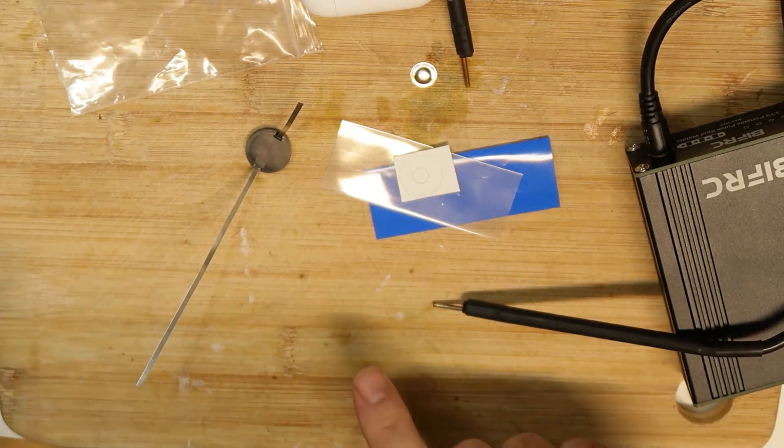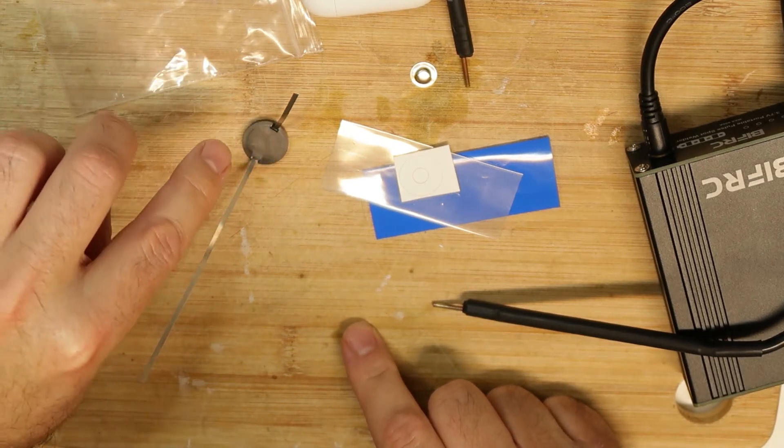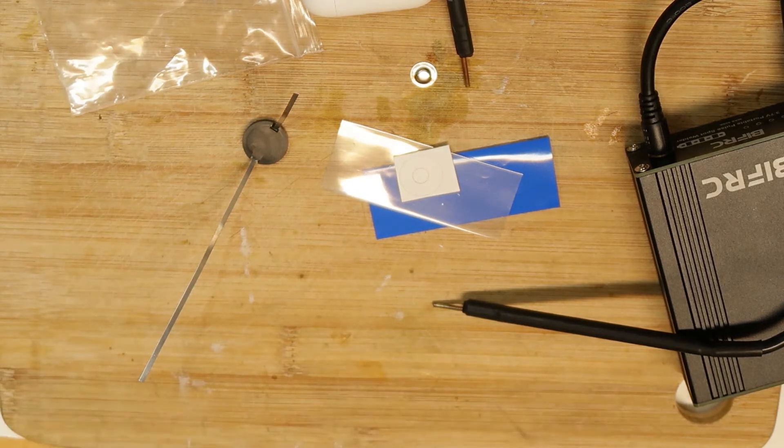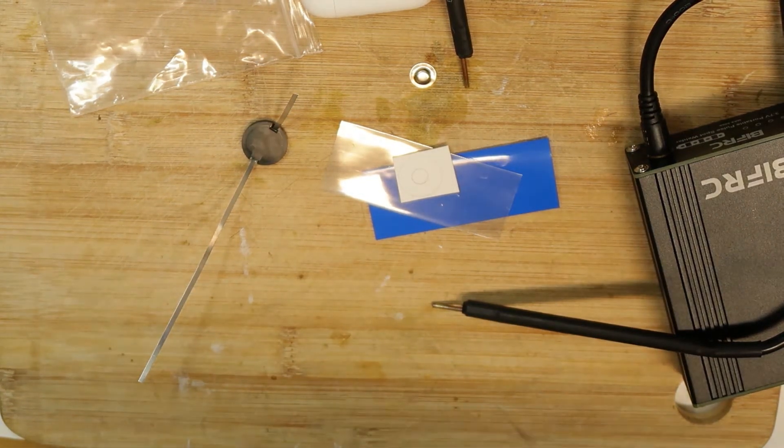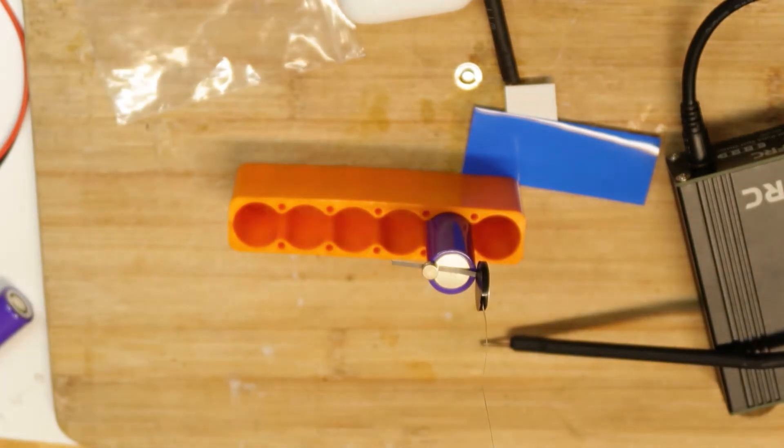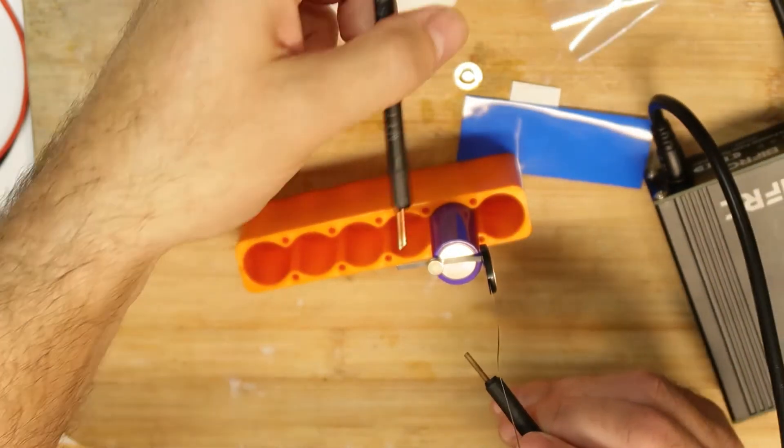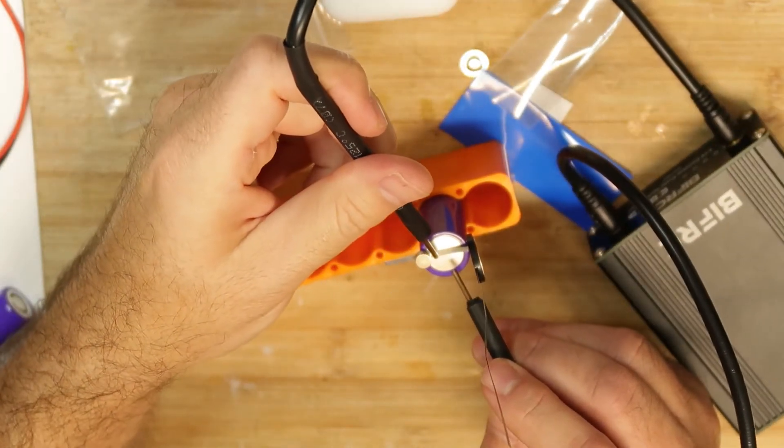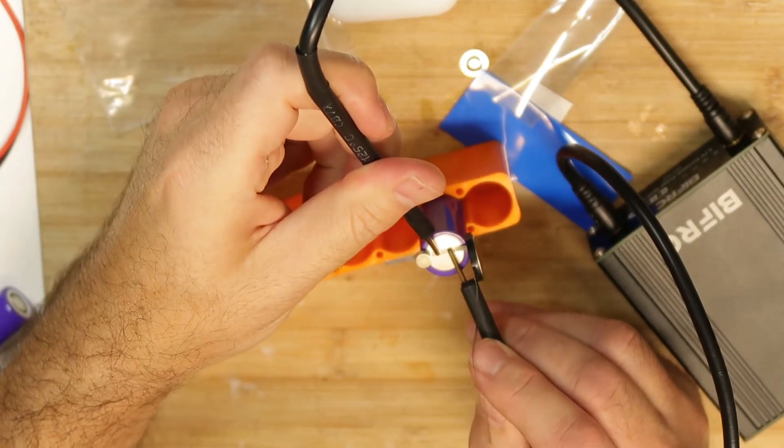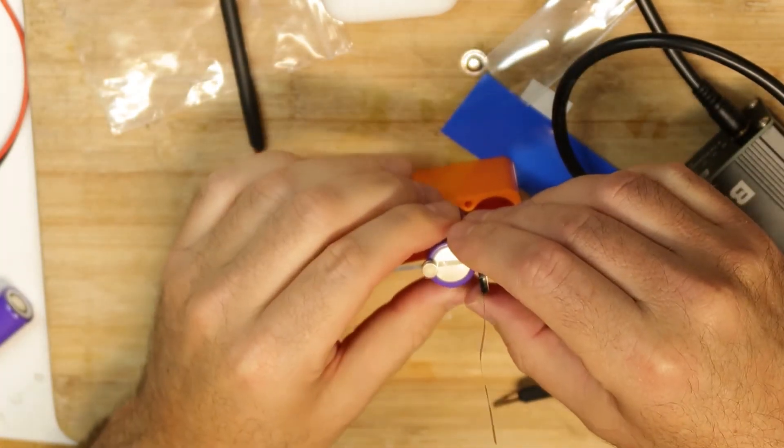Next of course is to connect it to our battery. Let's do it in a few steps and I will explain. First I want to connect the negative to the negative of this cell, so I will weld it. I think this is enough.